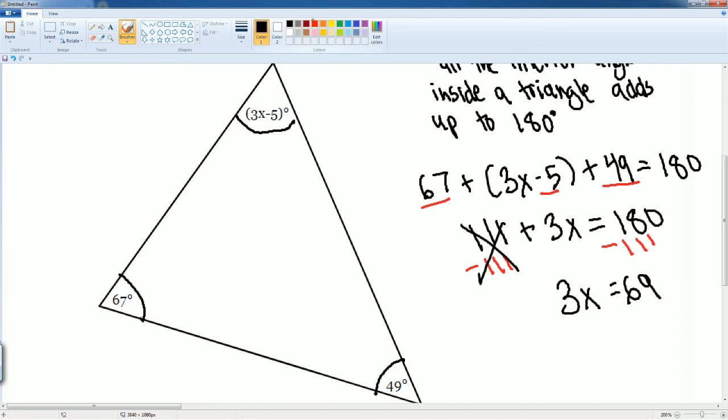Then we divide by 3. Then we divide by 3 because that is the number in front of the x and that gets us 69 divided by 3 gets us 23. So x is equal to 23.